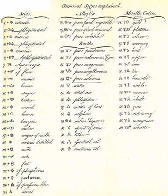Several symbols indicate units of volume, weight, or time: hour, dram, half dram, ounce, half ounce, scruple, and pound.